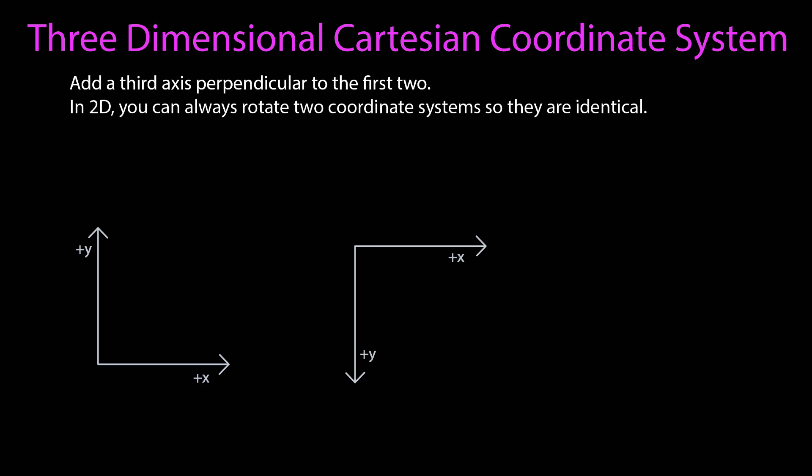So I've changed my second coordinate system a little. So now we want to know where to add the third axis. Well, it has to be perpendicular to the first two. So for both of these, the third axis needs to be coming out or into the surface.